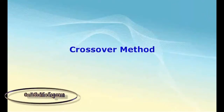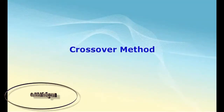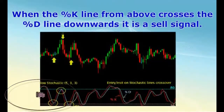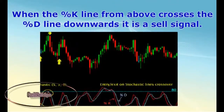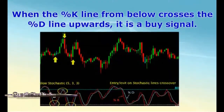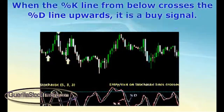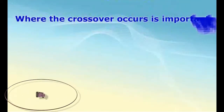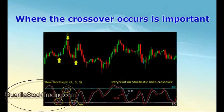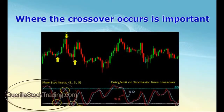Another popular trading method that uses the stochastic oscillator is called the crossover method. When the %K line from above crosses the %D line downwards, it is a sell signal. When the %K line from below crosses the %D line upwards, it is a buy signal. Stochastic line crossovers that happen above the 80% level and below the 20% level are treated as the strongest signals when compared to crossovers outside these areas.